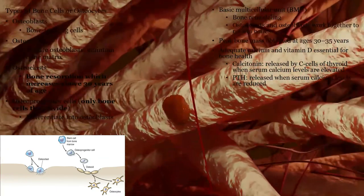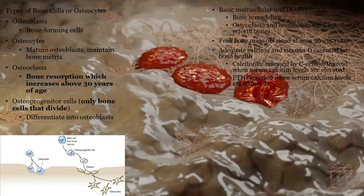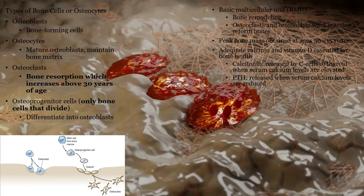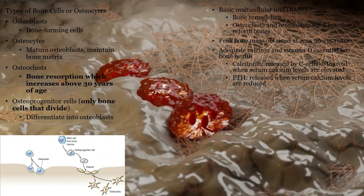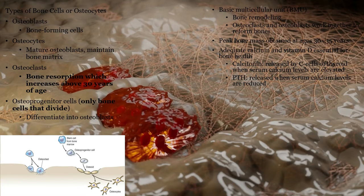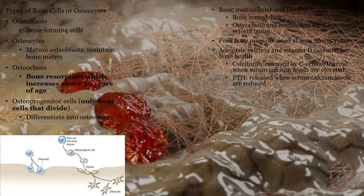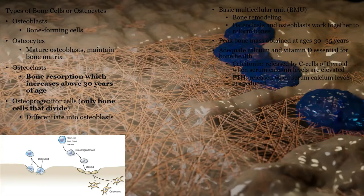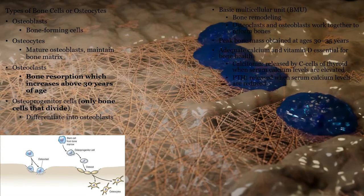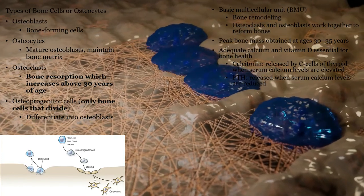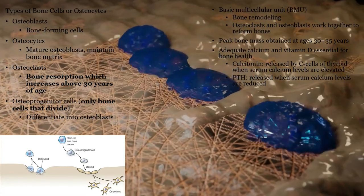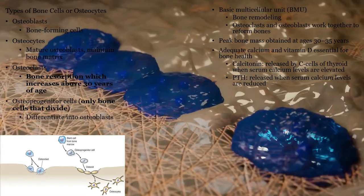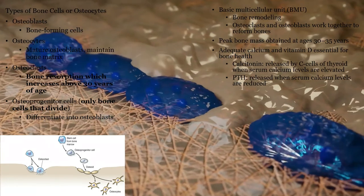We must maintain a specific range of calcium in the blood for muscle contraction. Vitamin D is essential in absorbing calcium and is made by UV radiation in the skin and activated by the kidneys. Also for the exam note, osteoprogenitor cells are the only ones that can divide.